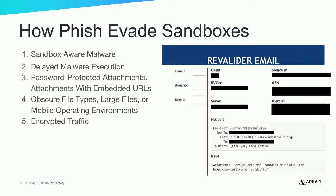Another trick to evade sandbox detection is sending malicious files in encrypted traffic. More than 50% of internet traffic travels encrypted these days, but unfortunately most organizations don't decrypt incoming traffic. That means files transmitted in encrypted traffic are invisible to the security infrastructure, and these files can bypass inspection by sandbox technology — the file will likely be delivered to the end user.